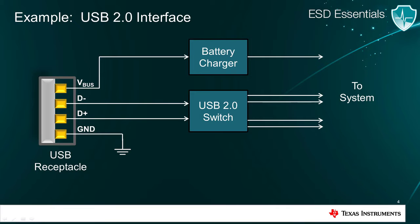Let's jump right in with a simple example with USB 2.0. You have already selected a USB 2.0 switch and a battery charger, but both require ESD protection since they're placed directly next to the USB receptacle, which is susceptible to ESD strikes.